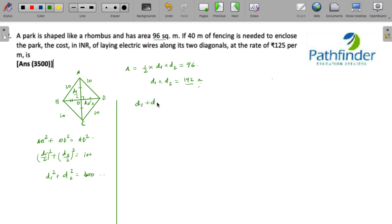We know that d1 plus d2 whole square is d1 square plus d2 square plus twice of d1 d2.